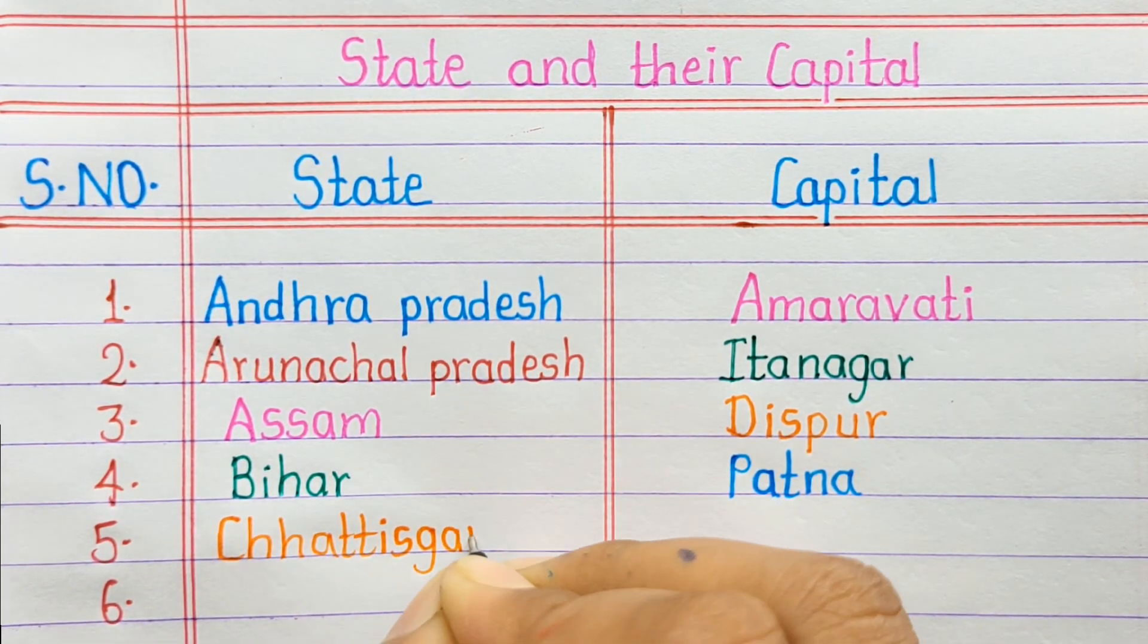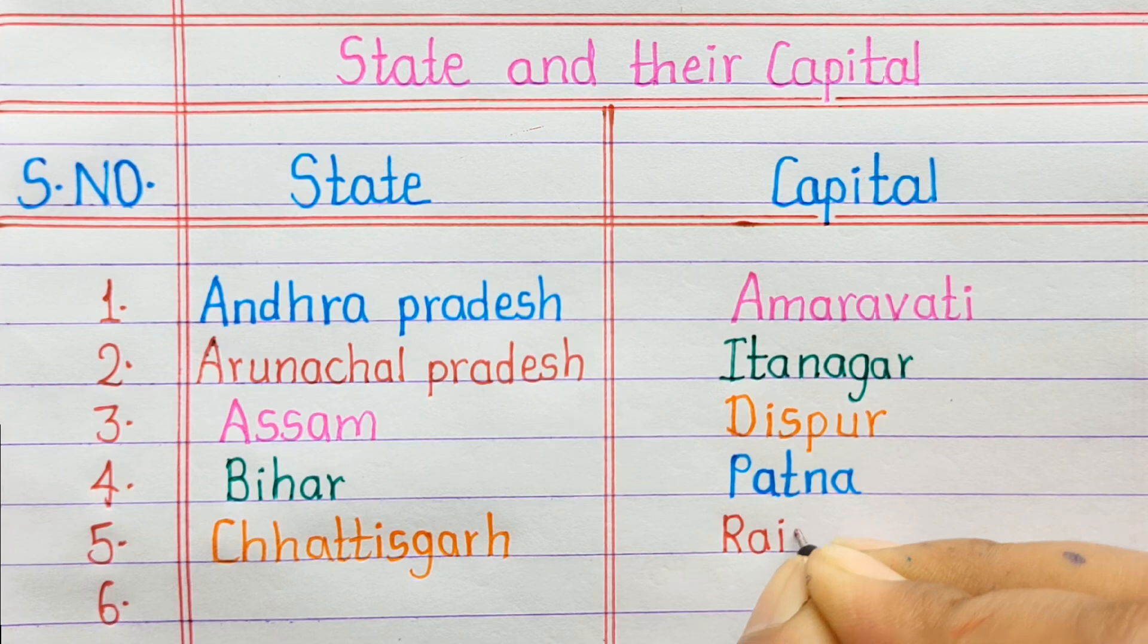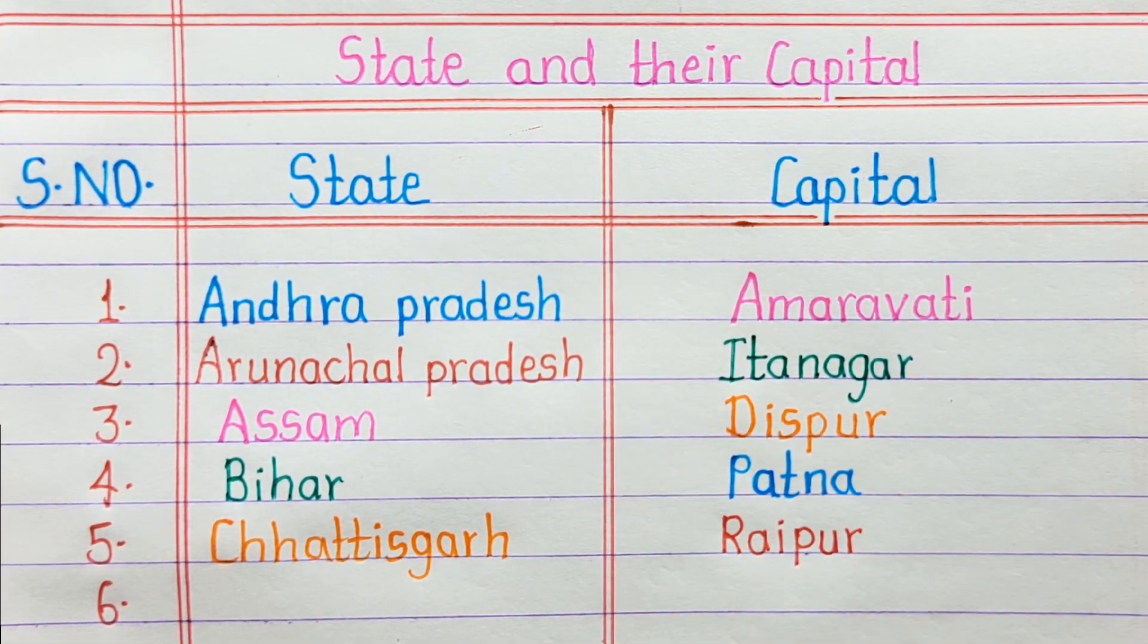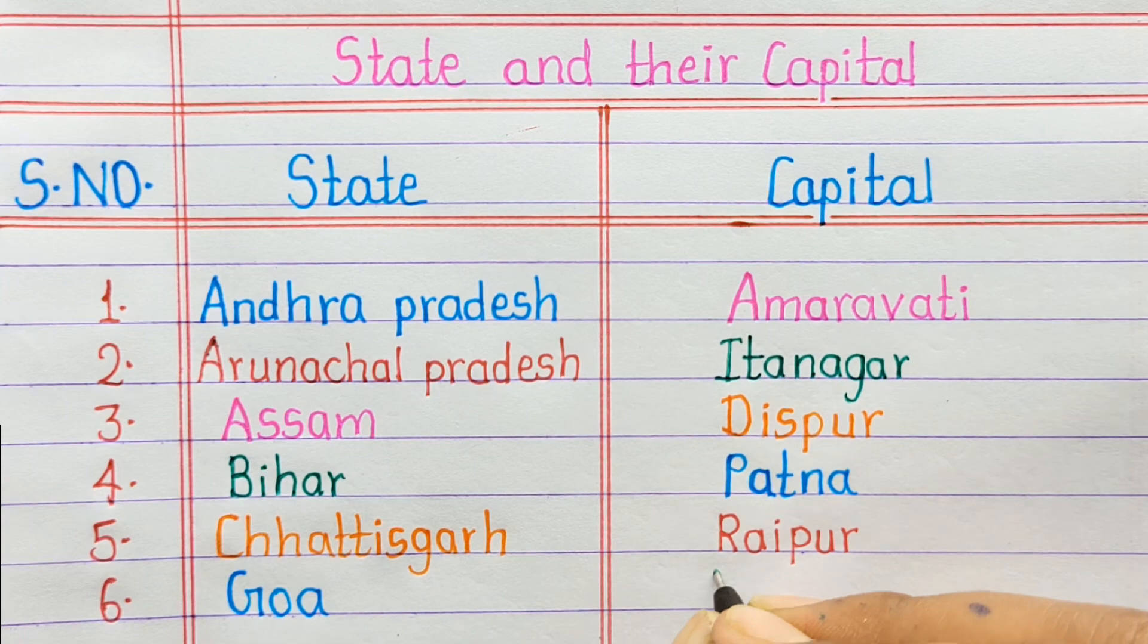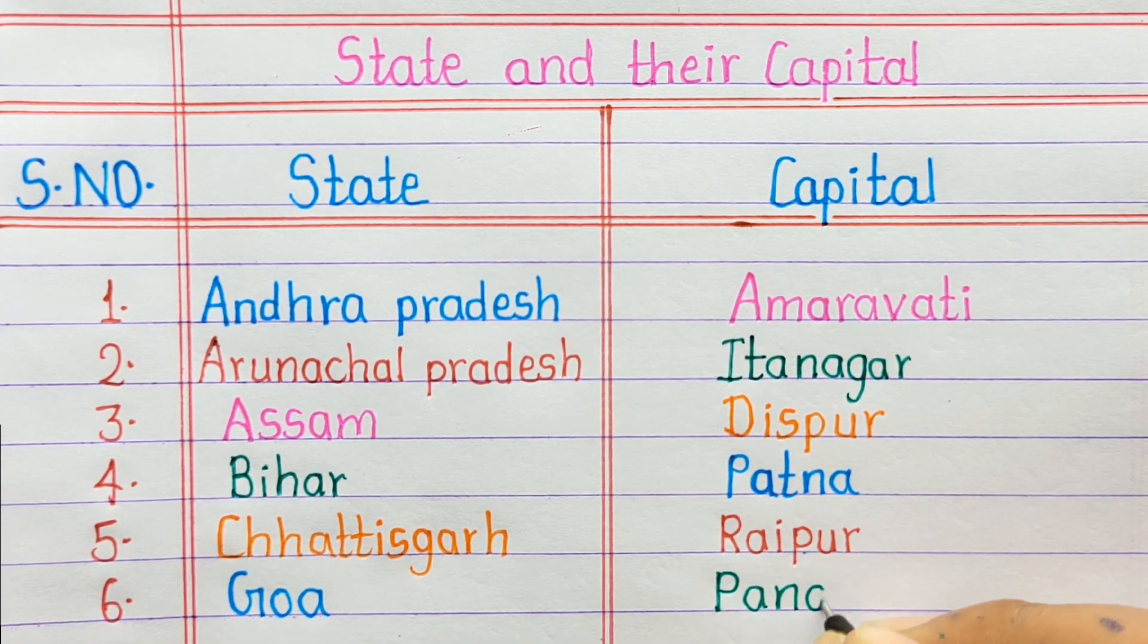Number 5. Chhattisgarh, Raipur. Number 6. Goa, Panaji.